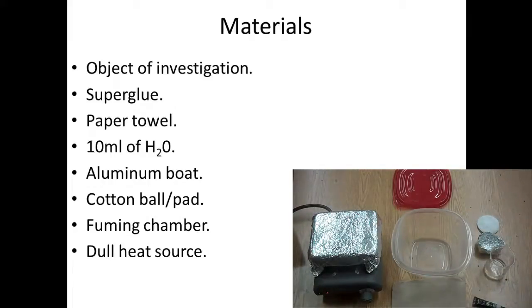I took a little bit of aluminum foil and I kind of made a little boat, I'm calling it, a little container. And inside that boat, we're going to put a cotton ball or a pad. We also need a fuming chamber and in this case, I'm just going to use a portable tupperware and some sort of dull heat source. In this case, we're going to use a hot plate set to very low with a piece of aluminum foil on top. But I've seen other people use a lamp or even a warm water bath.